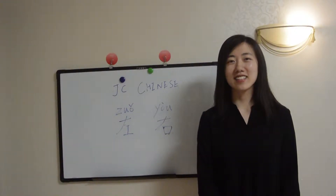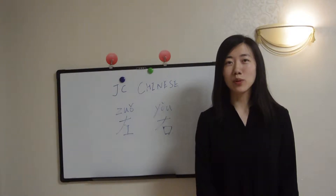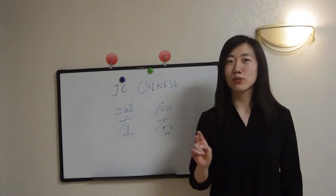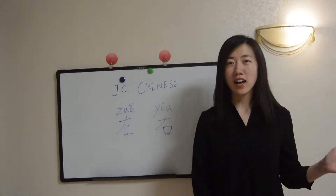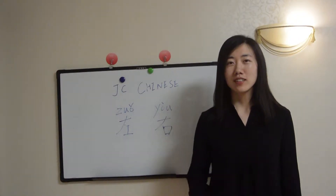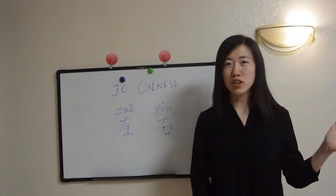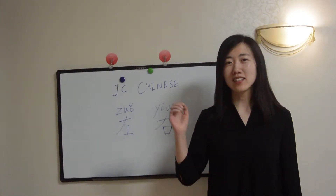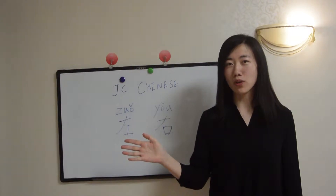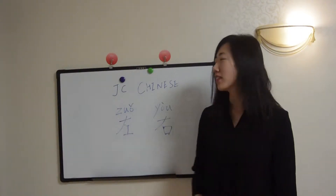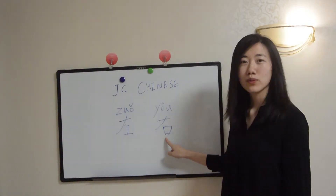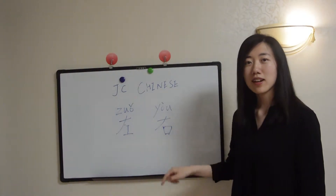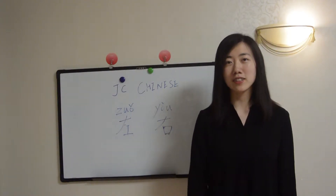Hi guys, this is John from JC Chinese. In this video we will continue to learn two new Chinese characters regarding orientation: 左 and 右. This is my 左手, left hand, and this is my 右手, right hand. 左 means left, 右 means right. Now let's write those two Chinese characters together.